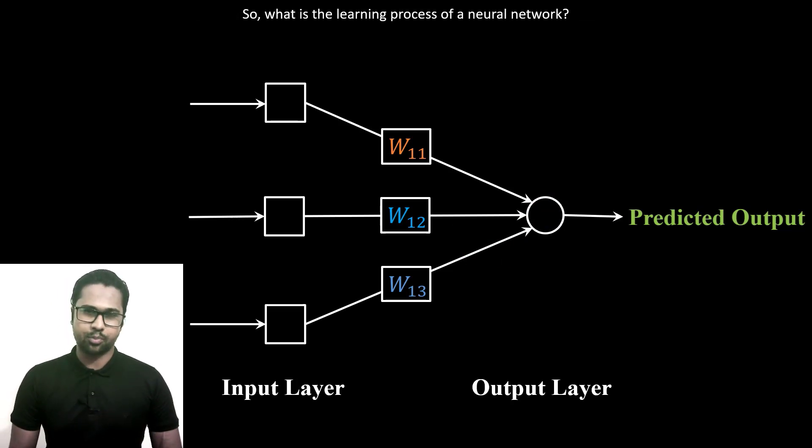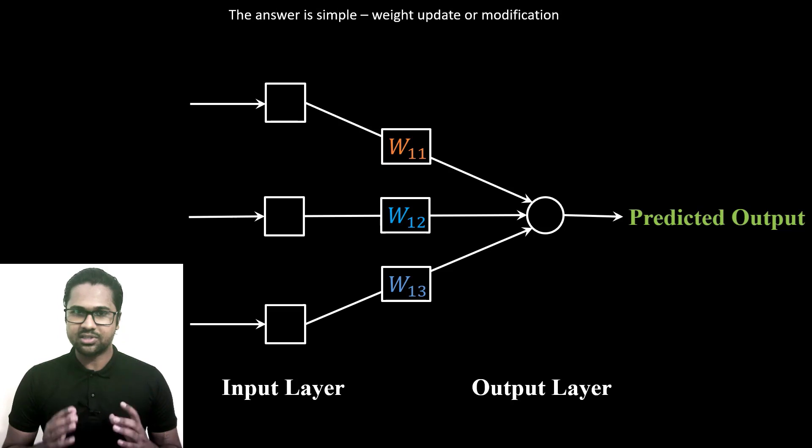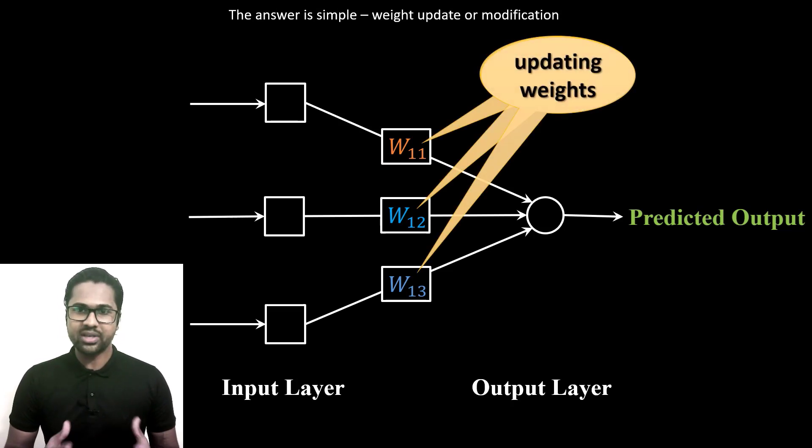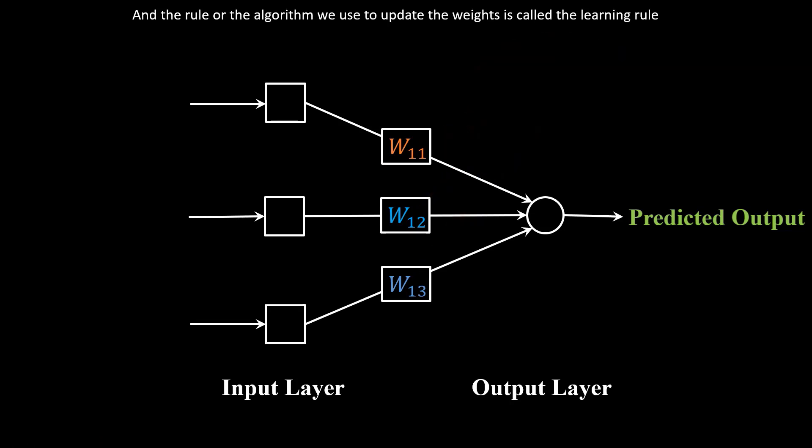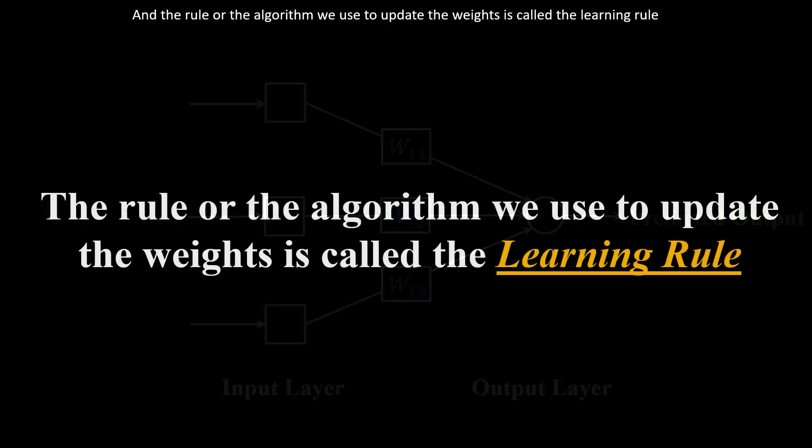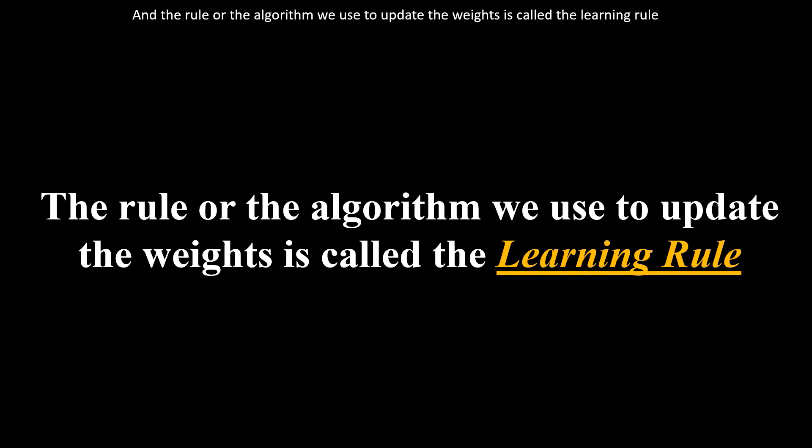So, what is the learning process of a neural network? The answer is simple: weight update or modification. That means the neural network learns through weight update. And the rule of the algorithm we use to update the weights is called the learning rule.